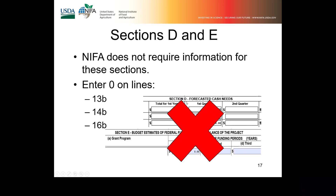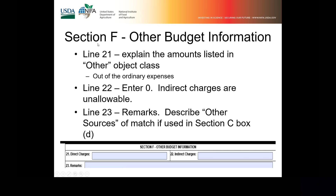Sections D and E, in the middle of page 3, are not required for NIFA. Section F is at the very bottom of the SF-424A on page 3. Line 21 requires you to explain the amounts listed in 'Other' — indicating what encompasses that category, such as rent or leased equipment. Line 22 would be zero because indirect charges are not allowable under the capacity programs. Line 23 is for indicating any matching funds coming from sources other than the state, and those should be explained in the remarks.